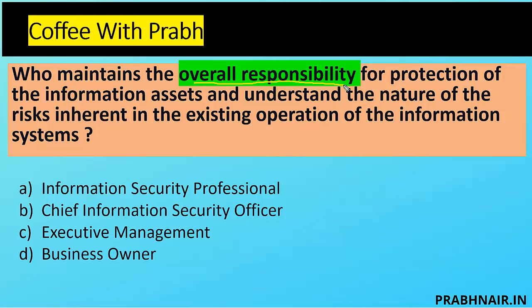Next coffee shot: Who maintains the overall responsibility for protection of the information asset and understanding the nature of risk inherent in the existing operation of information systems? There are two keywords: 'risk inherent' — meaning it already has an acceptance stage — and 'overall responsibility.' Option A, information security professional: he is responsible for controls to be implemented and building a program after identifying risk, but he does not have the authority to accept any kind of risk.